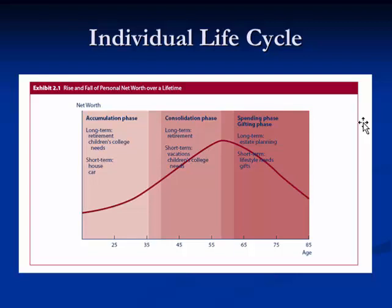Early on, around your early 20s, you're in the accumulation phase all the way up to your mid-30s or so. You're investing long-term for retirement and also for children's college needs and a house — which would be short-term. Hopefully you'd be considering buying a house relatively sooner. As you get older and accumulate some money in your mid-30s, you have something to consolidate.